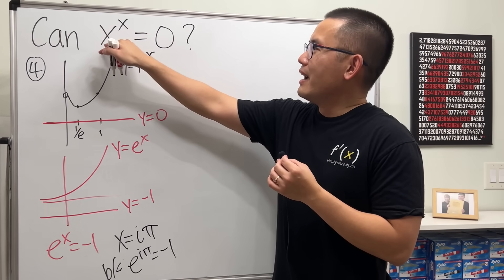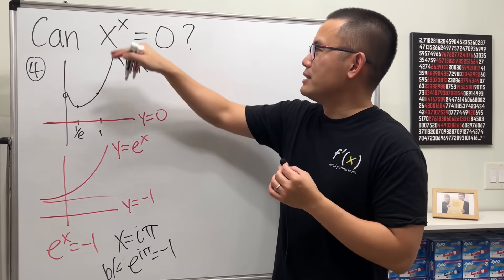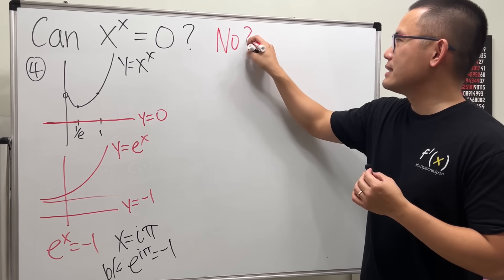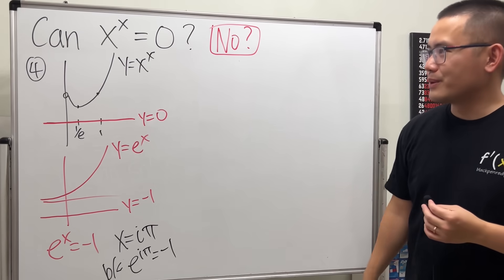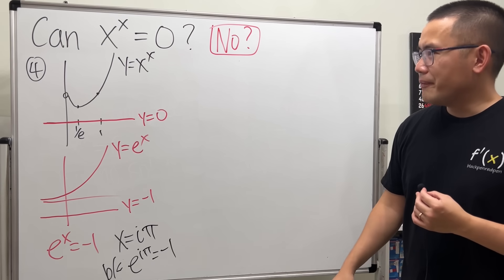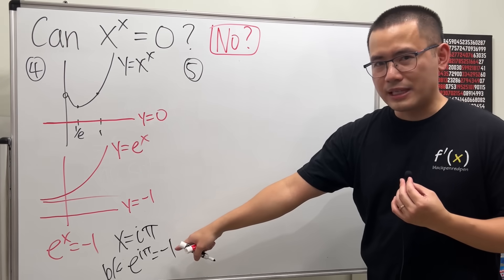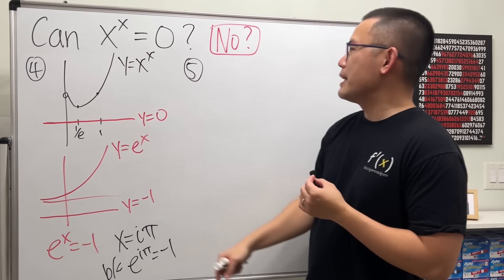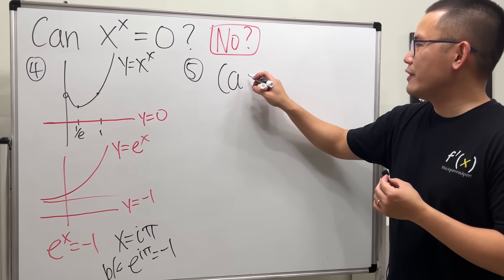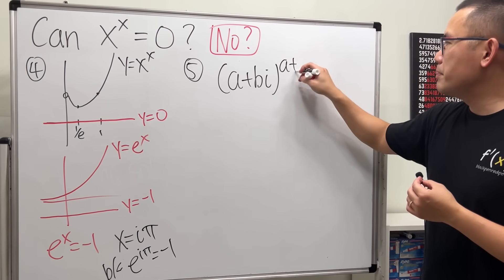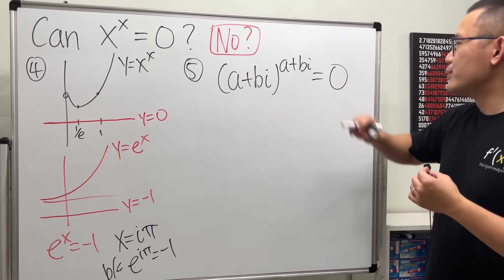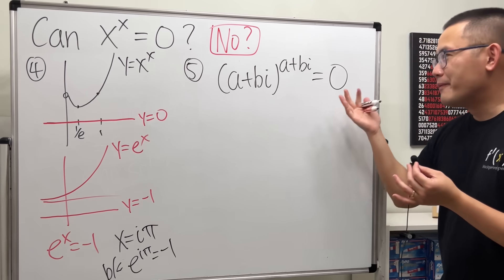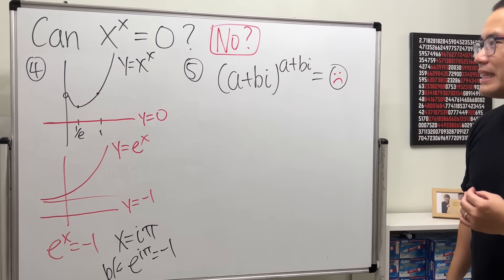I just don't know if there's a number that raised to itself equals zero. Most likely the answer is no, but maybe someone can figure it out. We could try complex numbers — suppose we have a plus bi raised to the a plus bi equal to zero. Once I write this down, I really don't know what to do with it. If you know how to continue from here, let me know.